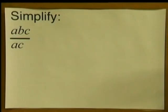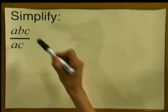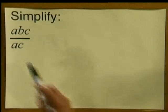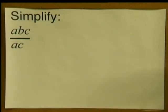What we have been doing here is simplifying algebraic fractions. Let's try a few more. Remember we can only cancel if we have factors. Simplify ABC divided by AC.